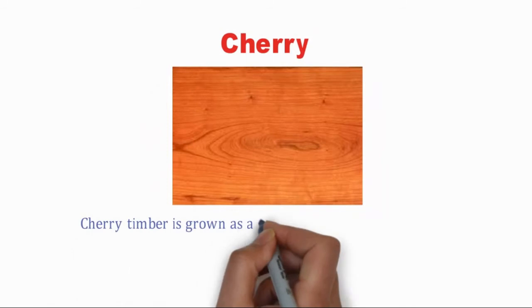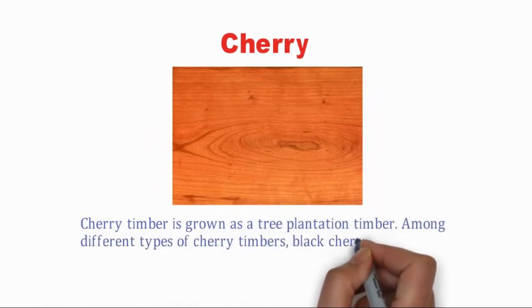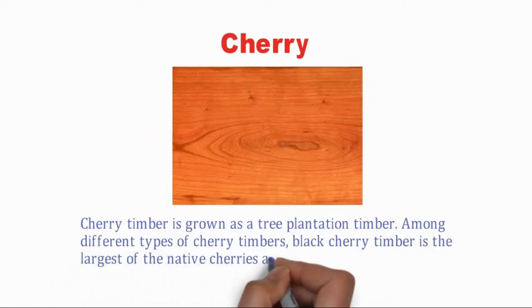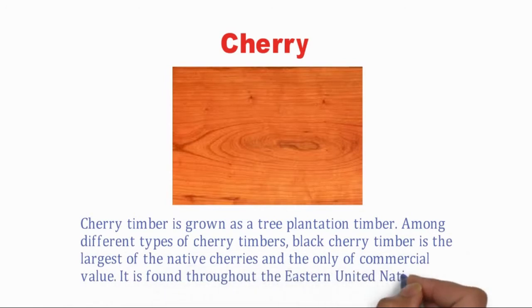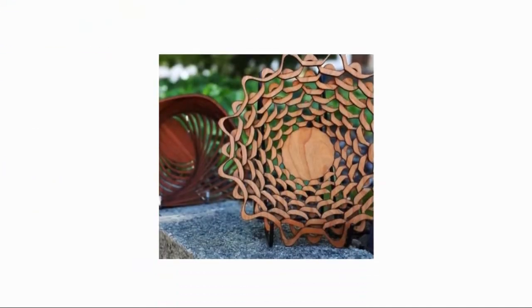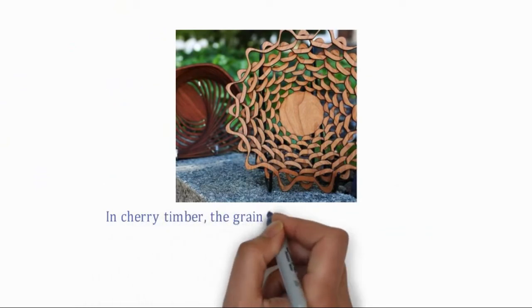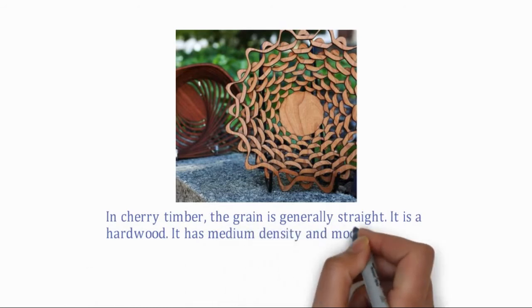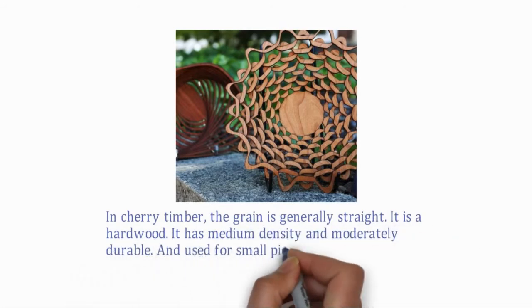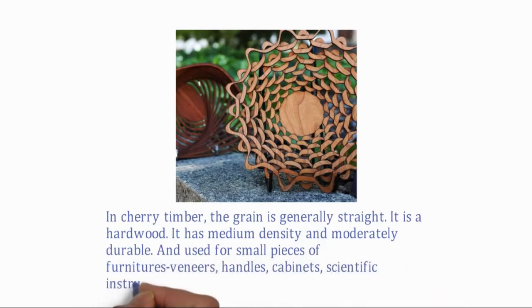Cherry timber is grown as a tree plantation timber. Among different types of cherry timbers, black cherry timber is the largest of the native cherries and the only one of commercial value. It is found throughout the eastern United States. Cherry timber has a generally straight grain, is a hardwood, has medium density, and is moderately durable. It is used for small pieces of furniture, veneers, handles, cabinets, and scientific instruments.